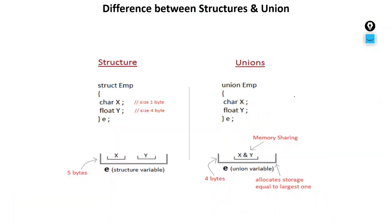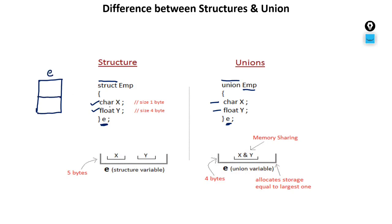Structure and union have no syntax difference — only a keyword difference. For structure we use 'struct', for union we use 'union'. We've created a structure having two members: character x and character y, with a variable named e. Similarly, we've created a union by the name m having two members: character x and float y, with a variable named e. When you create this variable, a memory block is created, with partitions equal to the number of members — so two partitions, one for x and one for y.